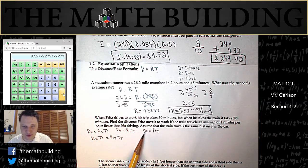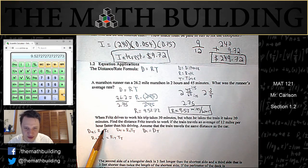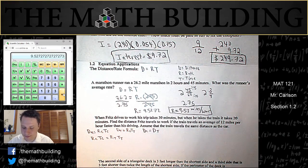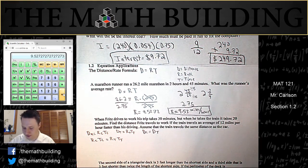So hopefully that makes sense because dc equals dt, rctc equals rttt. We still have too many variables though. So what are we going to do?